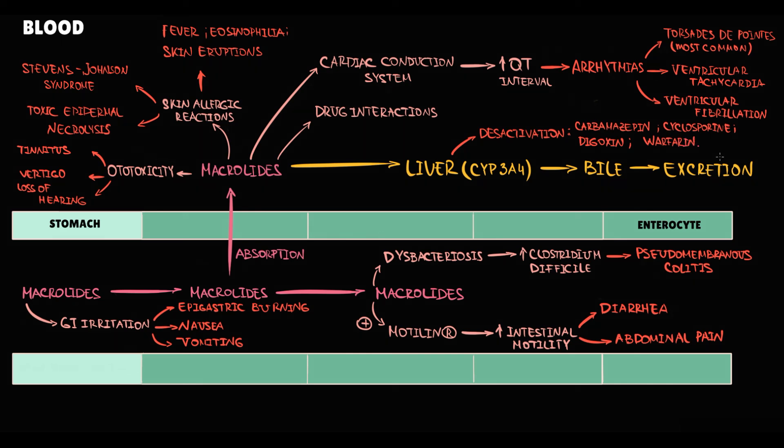And because cytochrome P enzyme metabolizes macrolides, when persons intake macrolides, they act as competitive inhibitors of cytochrome P enzyme. Thereby, they inhibit the metabolism of any other drug that is metabolized by this enzyme.